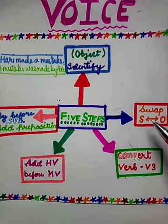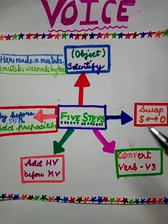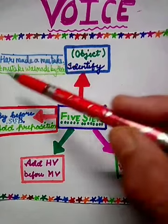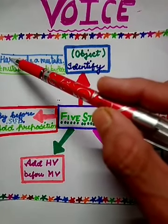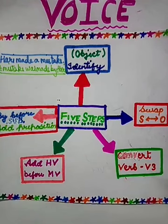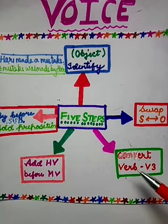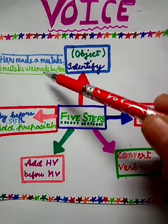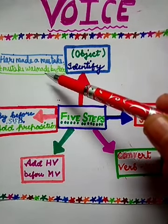Step two: swap — the subject becomes the object and the object becomes the subject. Here, 'a mistake' is the object, so it will become the subject, and 'Hari' is the subject, so it will become the object. Step three: convert the verb to its third form. In passive voice, we always use the third form of the verb. The third form of 'make' is 'made' — make, made, made.